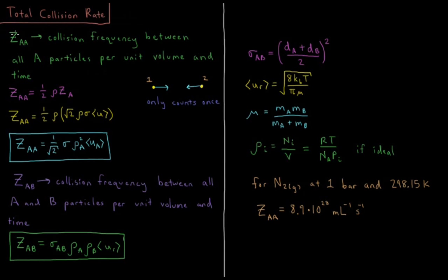We're going to define the quantity ZAA. This is the collision frequency between all particles of gas A per unit volume per unit time. For a given gas, the total collision frequency is going to equal one-half times the density of particles times the collision frequency of an individual particle.